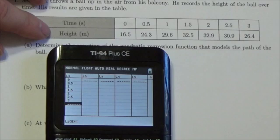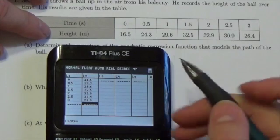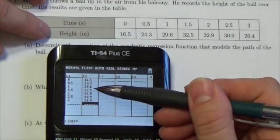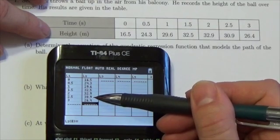16.5, 24.3, 29.6, 32.5, 32.9, 30.9, 26.4. So just double checking that the data has been entered in correctly. We're looking pretty good.